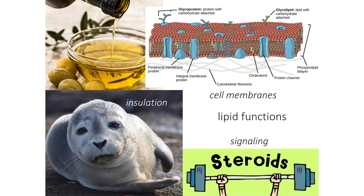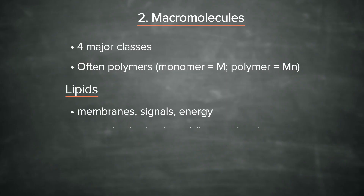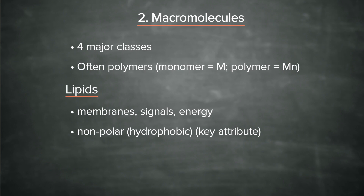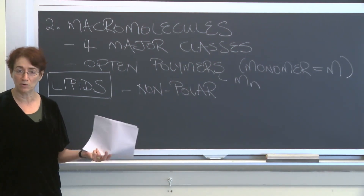Our first class of macromolecules that we're going to discuss are the lipids. Lipids do a whole bunch of things. They make up the cell membranes that keep cells intact. They insulate seals, they are part of the signaling circuitry aspect of cellular function, and they are also the way that energy is stored in our bodies to a very large extent.